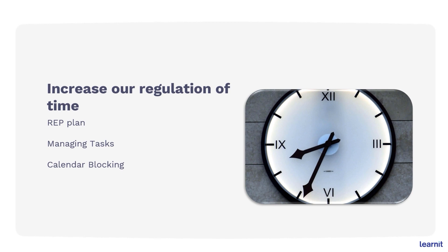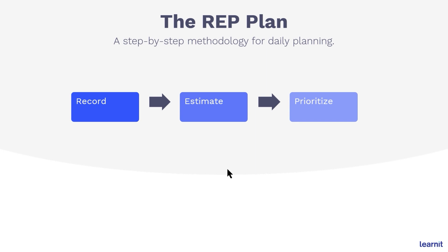Welcome back. Let's move on to segment two of our course. We will discuss increasing our regulation of time. We'll take a look at a nice plan called the REP plan, take a deeper dive into our task app to manage our tasks, and then look at the concept of calendar blocking. Let's take a look at the RAP plan — it's a step-by-step methodology for daily planning involving recording, estimating, and prioritizing.